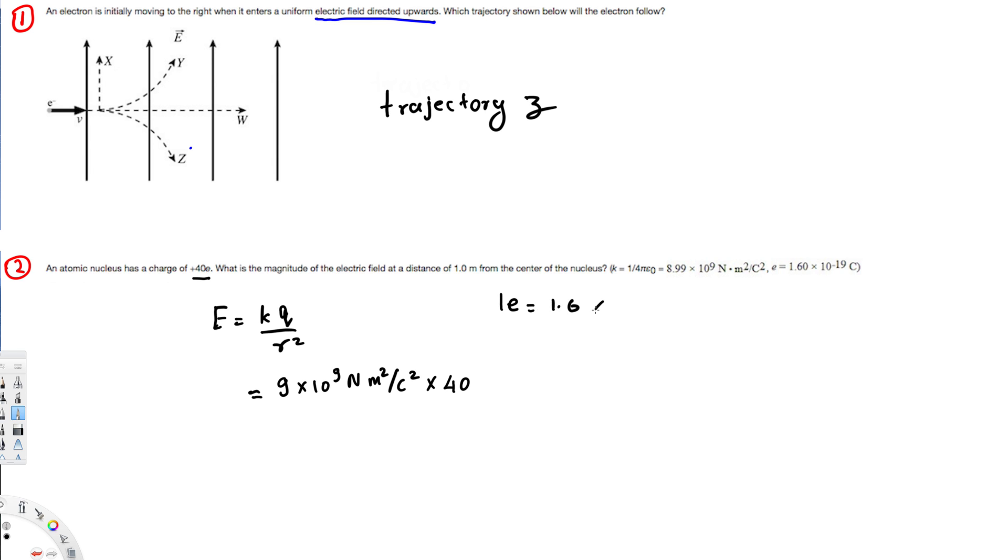They have provided 40 electrons, so 40 times one electron. One electron is equal to 1.6 times 10 to the power of minus 19 coulombs. So here we have 40 electrons, so we have to multiply 40 by 1.6 times 10 to the power of minus 19 coulombs over r squared. R is the distance, that is basically one meter squared.